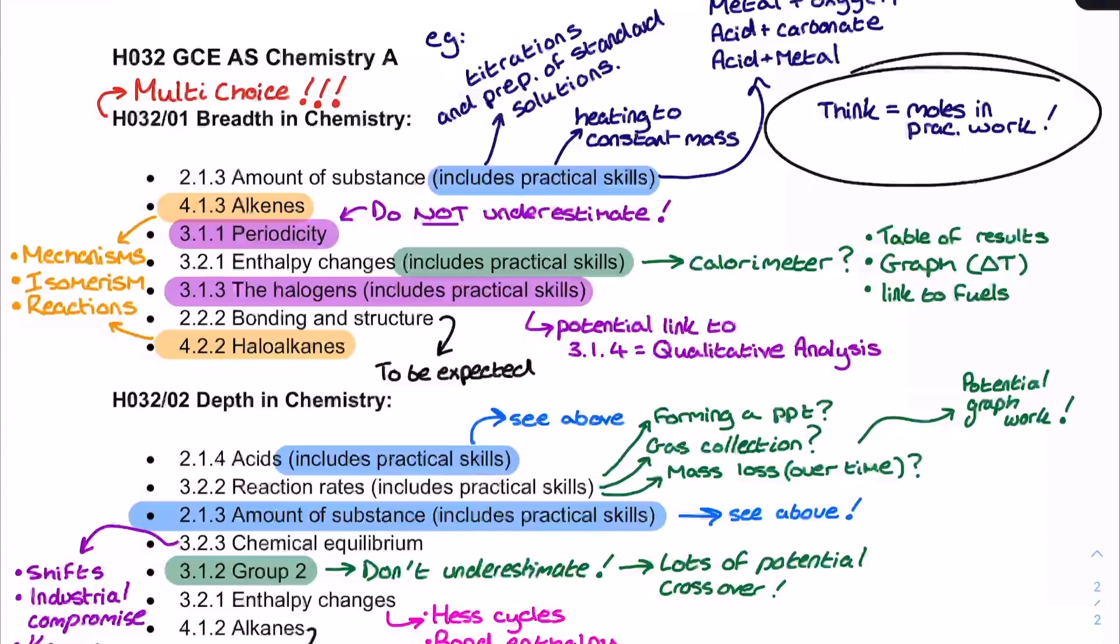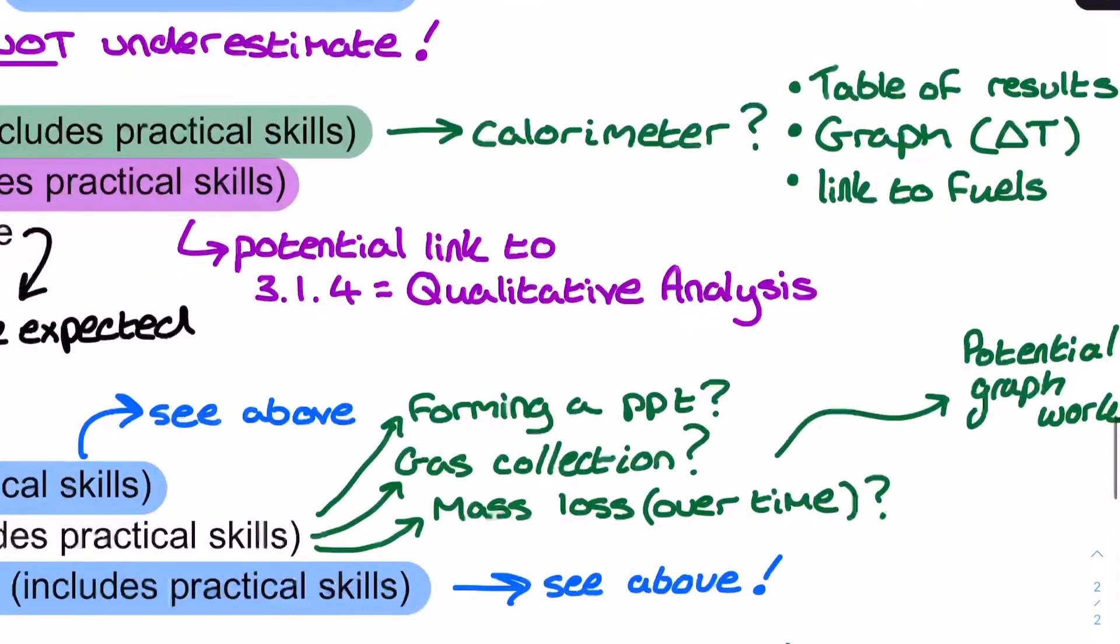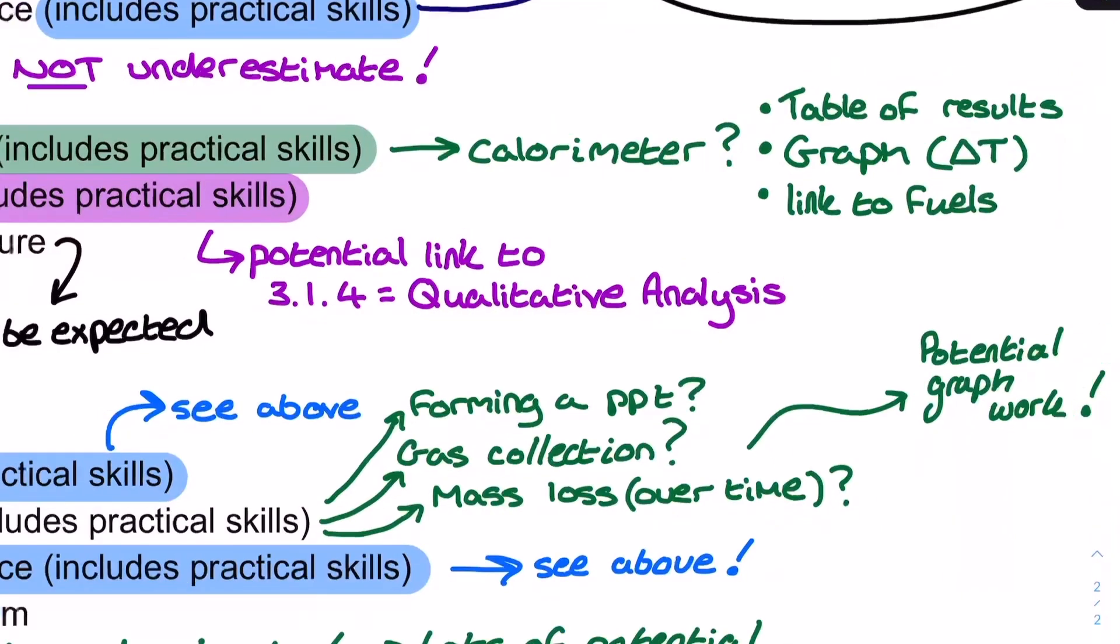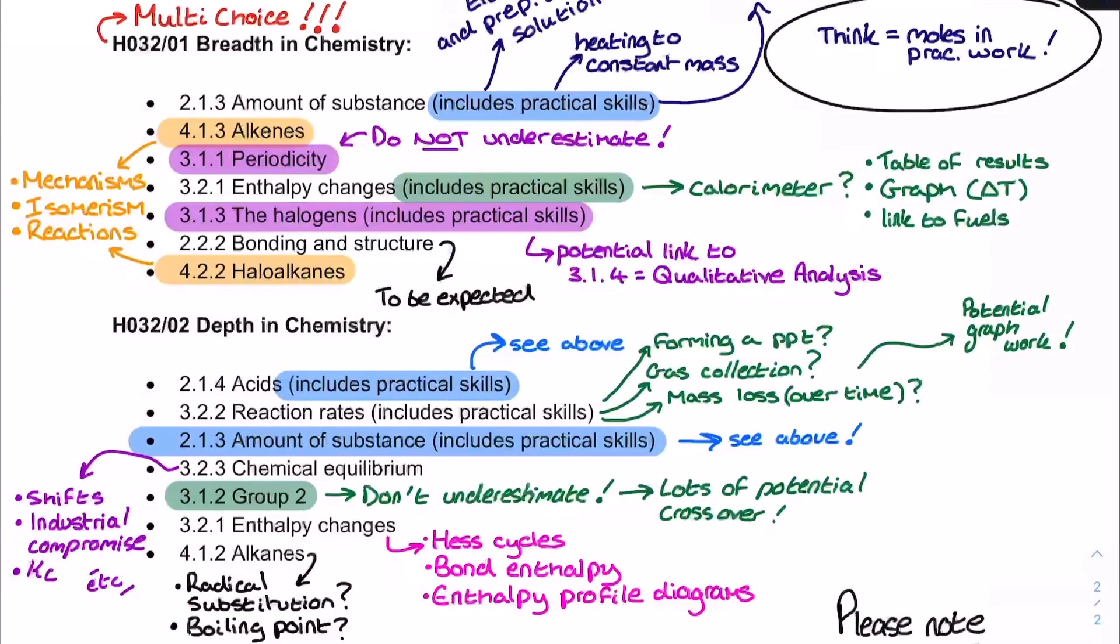Now, do not underestimate periodicity. This includes things like ionization energies and structure and bonding features, particularly across period three. So please do not underestimate the periodicity section of this list. The halogen section as well, we've got here the ability of them to behave as oxidizing agents, as well as a potential link to the very next section of the spec in a small way, qualitative analysis, looking at precipitates, looking at colors. So make sure you consider that alongside the halogens in just as much detail.